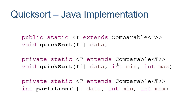Our implementation uses a generic array of objects that extend Comparable. If we're just passed the array, we call a method that takes a min and a max value. The initial min is zero and the initial max is length minus one. We also have a partition element method that takes a min and a max so we can operate on only a certain part of the array.